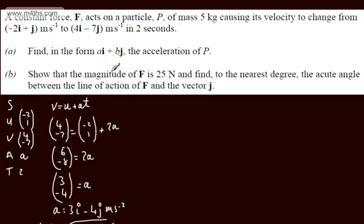In part B, we need to show that the magnitude of F is 25 newtons, and find to the nearest degree the acute angle between the line of action of F and the vector j. We're going to use Newton's second law. With Newton's second law, F is equal to MA. Force is equal to mass times acceleration.